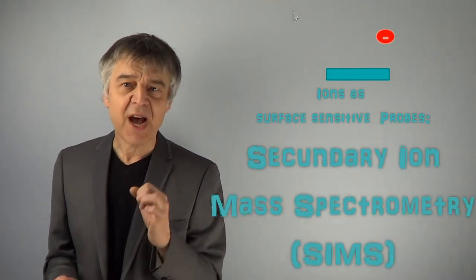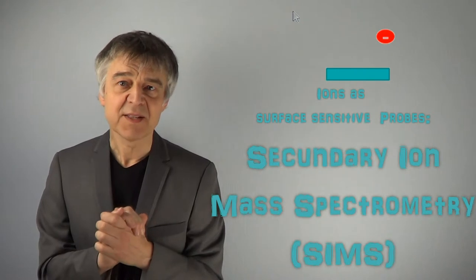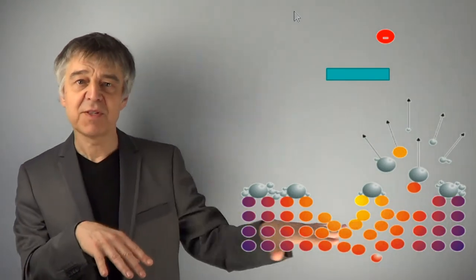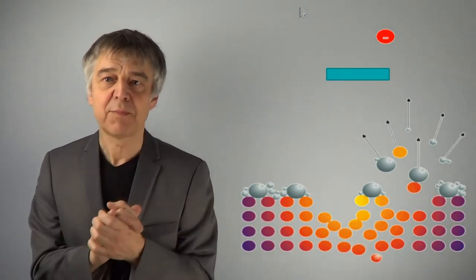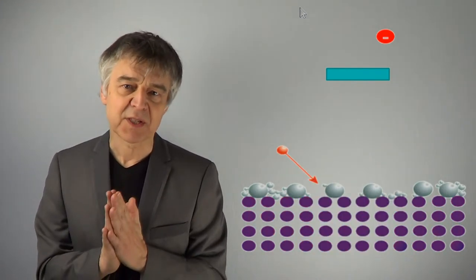In secondary ion mass spectrometry the surface is bombarded with primary ions, which erode only its uppermost atomic layers. This process is called sputtering. The sputtered layer is now partly present as secondary ions and analyzed by mass spectrometry.